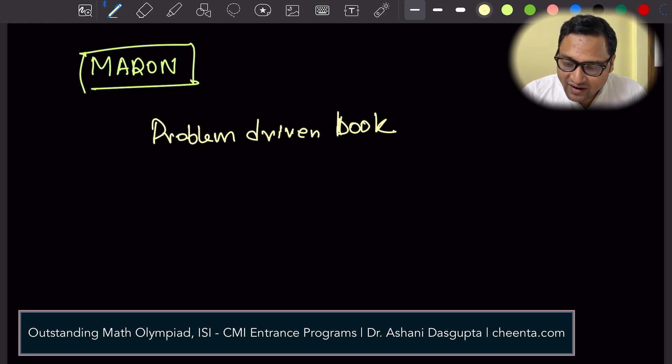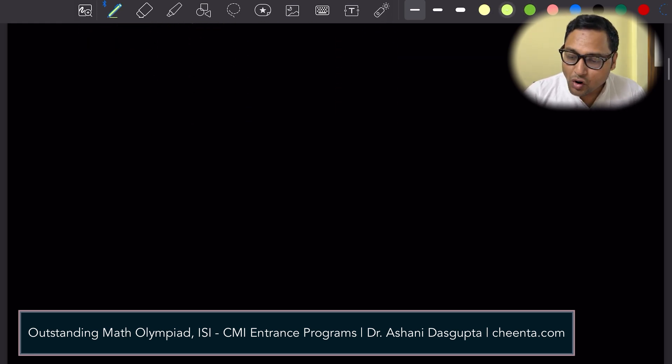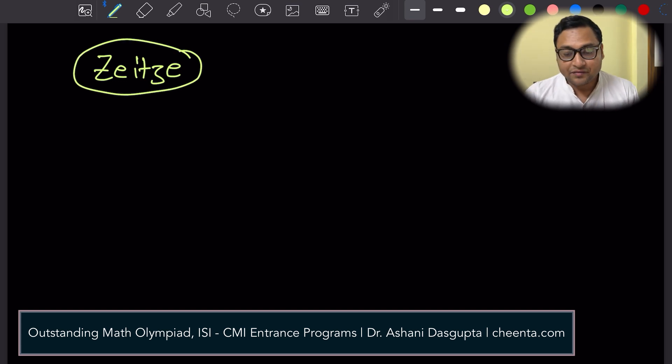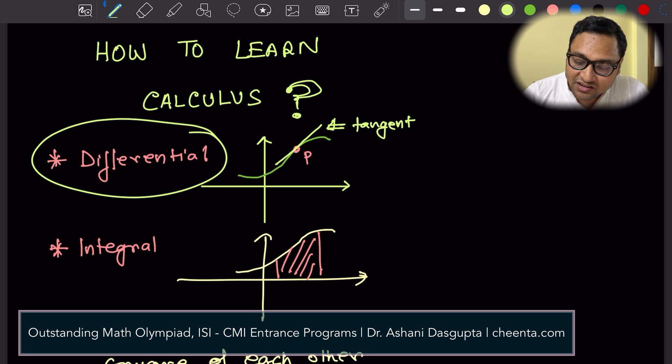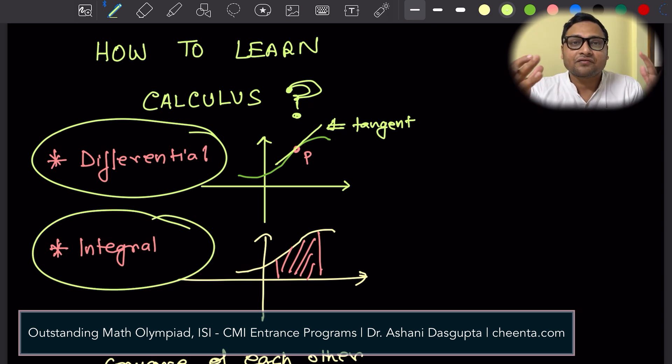And Maron in Single Variable Calculus actually starts with a problem. There are a bunch of problems, and as you go through the problems, your understanding of the subject becomes even better. And finally, I would say there is a book called Art and Craft of Problem Solving by Paul Zeitz. I think I'm writing the spelling incorrectly. Remember I told you a few minutes ago that differential and integral calculus are like converses of each other? Paul Zeitz's book, Art and Craft of Problem Solving, has a beautiful chapter which geometrically makes you understand why this is the case, why these are converses of each other.